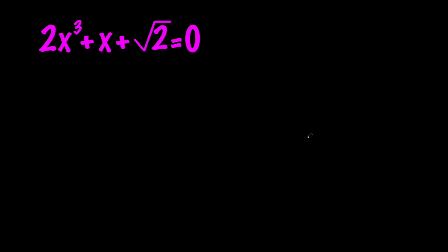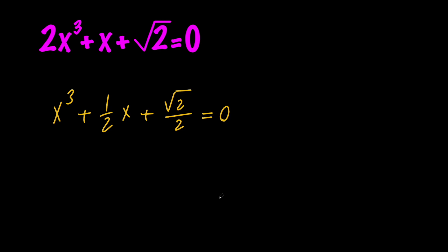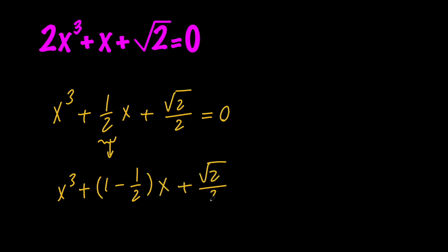So let's go ahead and solve this for x. In order to do that, first of all, let's go ahead and divide everything by 2. So we're going to get x cubed plus 1/2 times x plus √2/2 equals 0. Next, let's go ahead and replace 1/2 with 1 minus 1/2, so we have x cubed plus this times x plus √2/2 equals 0.